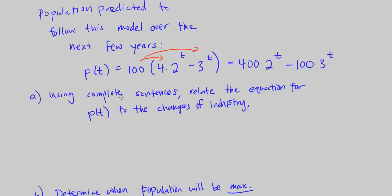So part A says, using complete sentences, relate the equation for P of t to the changes in industry. Well, we know that the new fiber optics plant means more jobs, new jobs. We also know that the old quarry is about to close, old quarry closing, and that means losing jobs. New jobs means more people, losing jobs means less people.